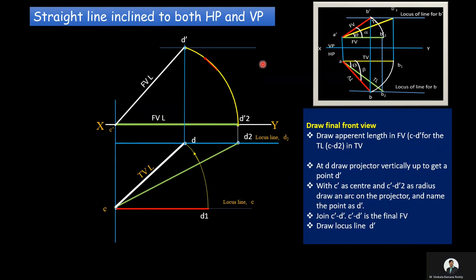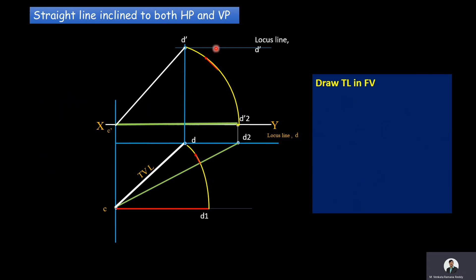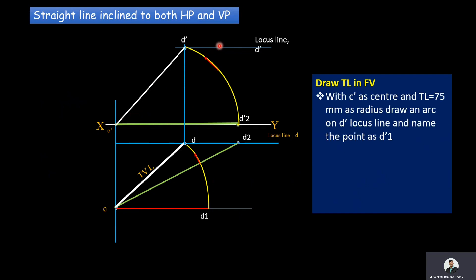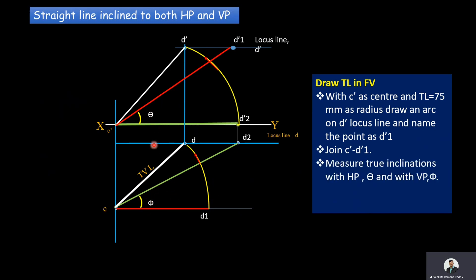After that, we draw the true length in the front view. With C-dash as center and true length 75 mm as radius, draw an arc on the D-dash locus line and name this point D1-dash. Join C-dash and D1-dash — this is the true length in the front view. Its inclination with HP is theta and its inclination with VP is phi. We need to measure both theta and phi values — theta is the true length inclination with HP and phi is the true length inclination with VP.